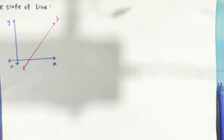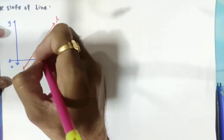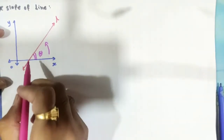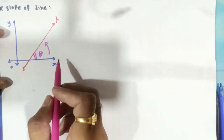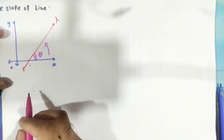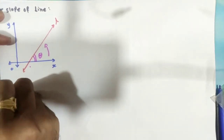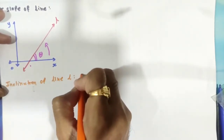This line L is making angle theta with the positive direction of the x-axis in the anti-clockwise direction. The angle made by this line with the positive direction of the x-axis — we have two options, so we consider the angle in the anti-clockwise direction. That angle is the inclination of the line. The inclination of line L is the angle theta.